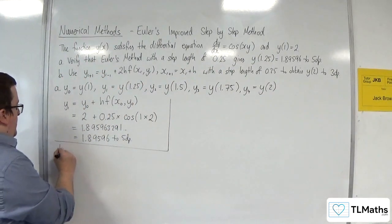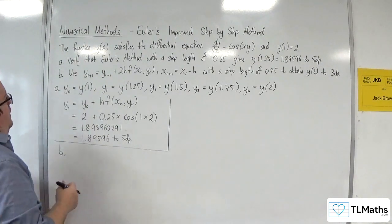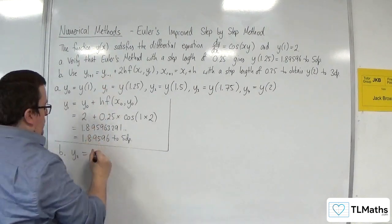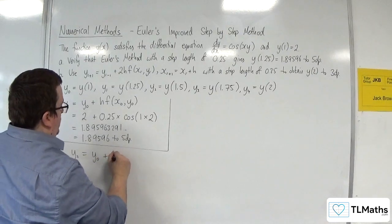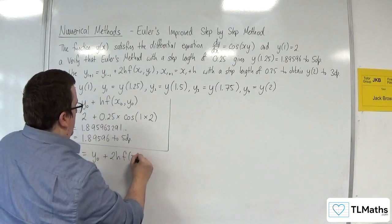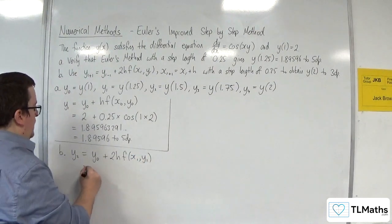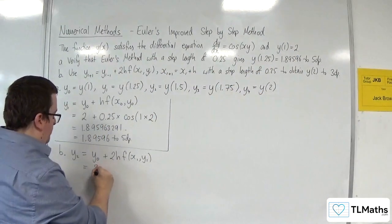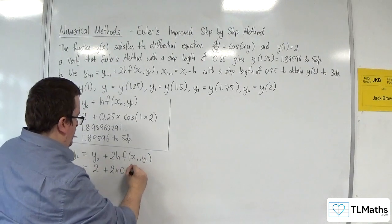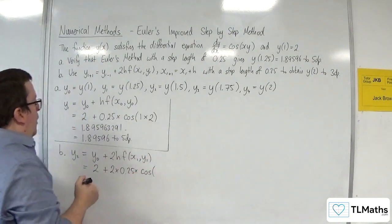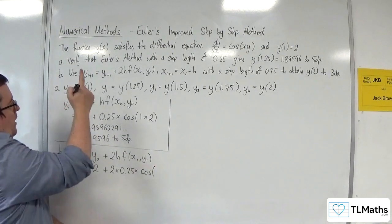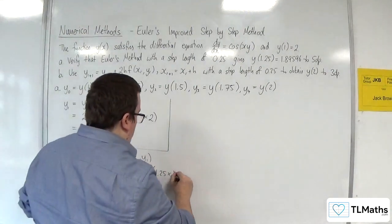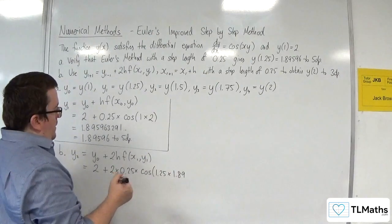Okay, so for part B then, what we're going to need to get y2 is going to be equal to y0 plus 2h times f of x1, y1. Now y0 is y of 1, which is equal to 2, plus 2 times 0.25 times cosine of x1 times y1. Now x1 is 1.25, and y1 was this 1.89596, etc.